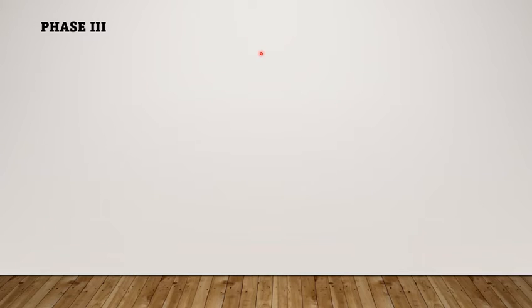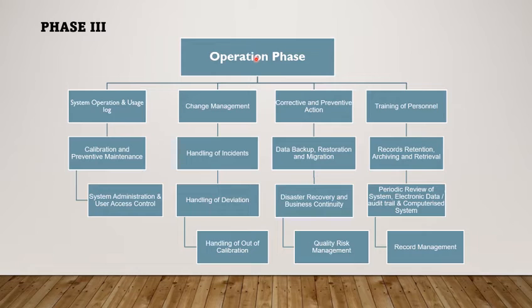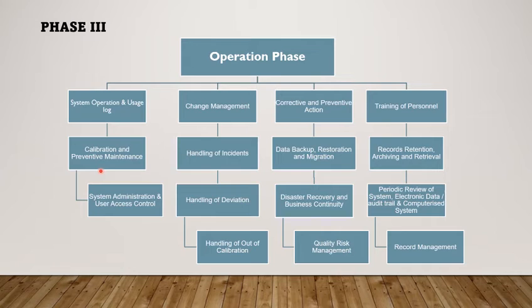Once the system has been validated and released for routine use, business continuity plans shall be available to ensure the validated state of the system is maintained throughout its operational life. Standard operating procedures to operate the relevant system and its usage log should be available. A change management procedure should be available whenever any modification is required with respect to the system, process or procedure. A procedure should also be available to take corrective and preventive action whenever any event is observed, to provide training to personnel, to perform calibration and preventive maintenance, to handle incidents observed during routine activity, and for backup, restoration and migration of electronic data generated by the system.